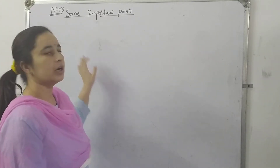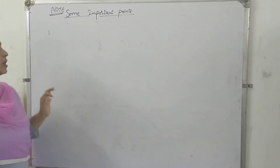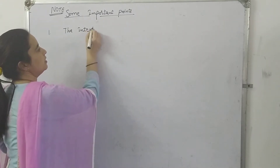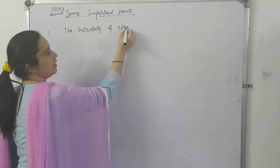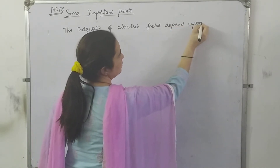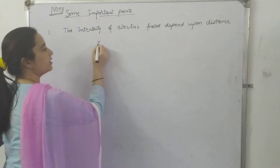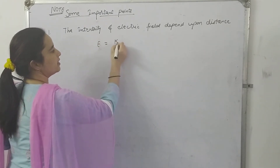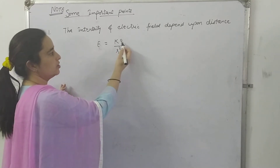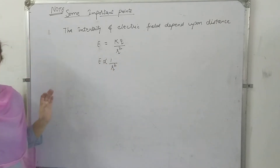Now students, note down some important points regarding electric field. The first point is: the intensity of electric field depends only on the distance. We have found out the electric field due to a point charge, and the expression is KQ upon R square. Here K is constant and charge will be given. It means electric field is inversely proportional to the square of the distance.